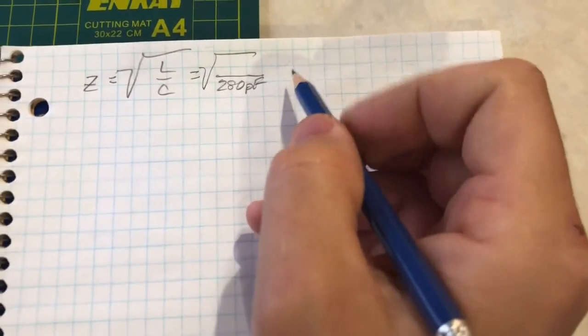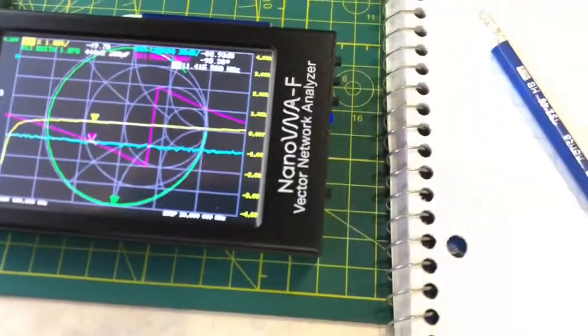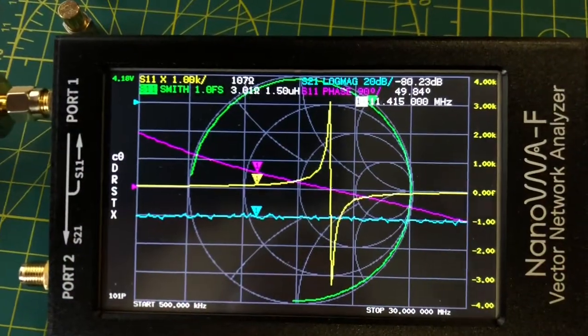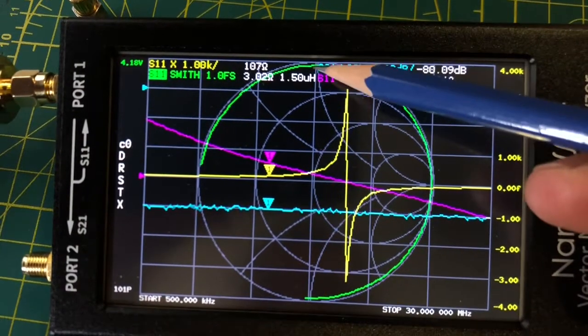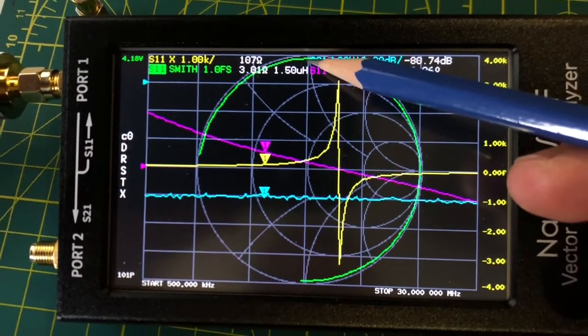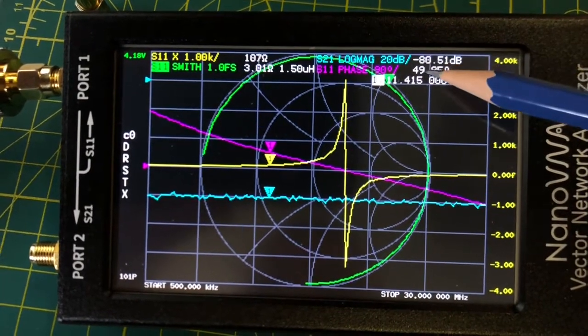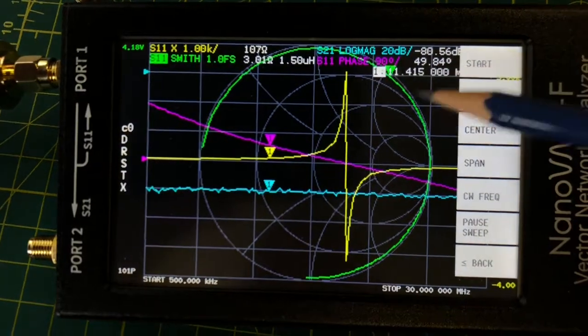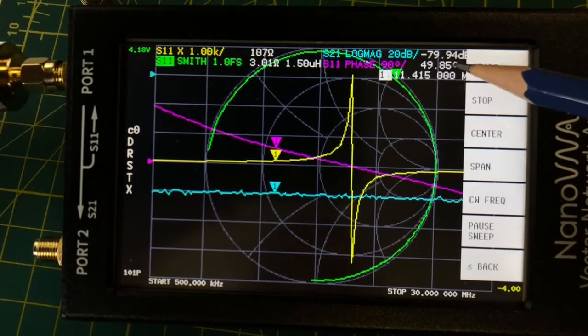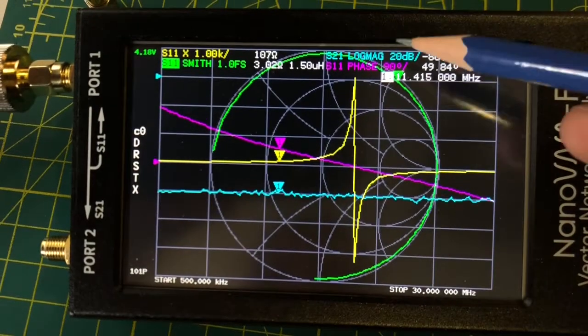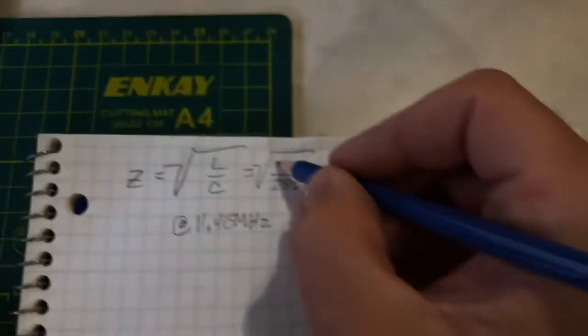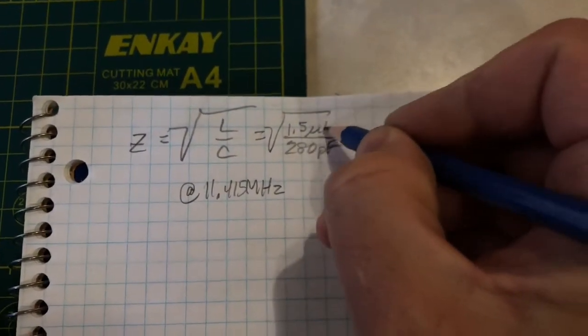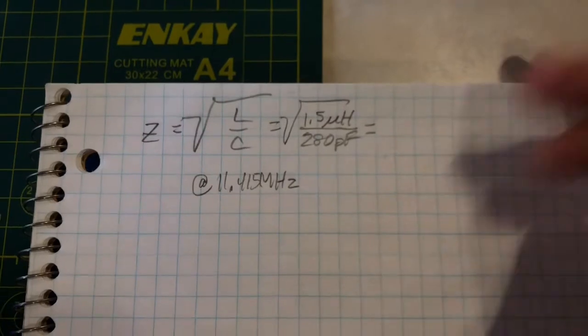I've gone ahead and shorted the end of the cable. Now we notice that instead of moving completely to the opposite side of the Smith chart at positive 90 degrees, it's actually rotated around to 49.85 degrees. The inductive reading here is 1.5 microhenries.